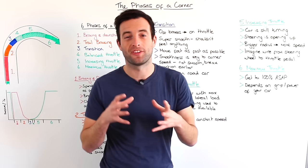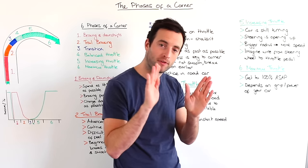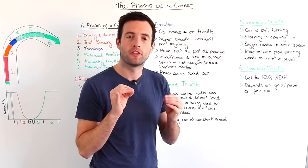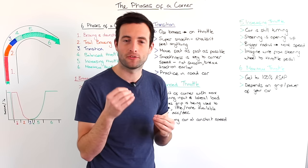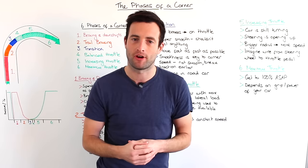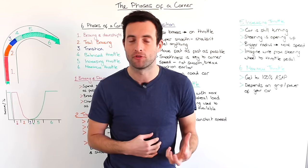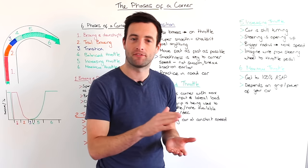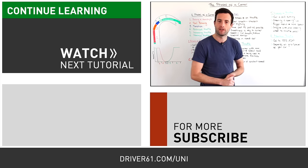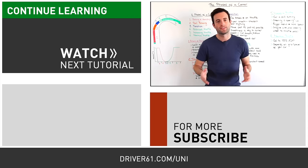Finally we move on to stage six, which is a relatively simple part. We're going from increasing throttle to being flat out on the accelerator. The trick is knowing when to get flat out without breaking traction. It will depend on the grip or the power of your car — if you have less grip or lots of power you're going to have to wait a little bit longer before you get flat out on the accelerator.